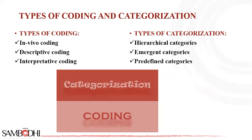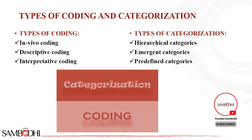When should you use descriptive coding? Whenever you are a beginner in qualitative research, when you have a wide variety of data forms such as transcripts, field notes, journals, documents, diaries, correspondence, artifacts, or video. Also if you are tracking longitudinal changes across multiple studies, or when you want to organize a large data set by topic area. To do descriptive coding, read through your data, identify the topics that surface, create codes for each topic, pull together all the excerpts related to each descriptive code, and then use other coding methods to derive deeper meaning from the data.